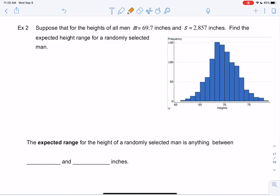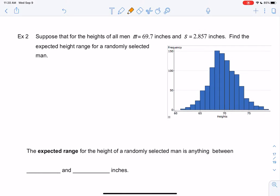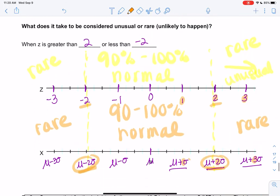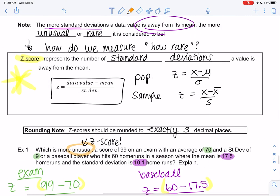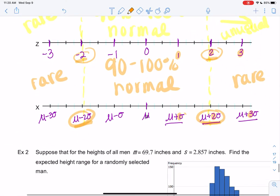Alright, let's continue with chapter 3.5 where we were interpreting standard deviation and finding those ranges of numbers and the z-scores.